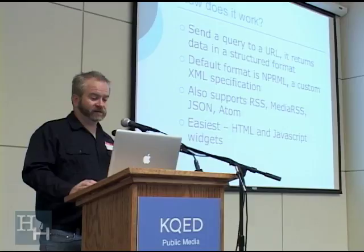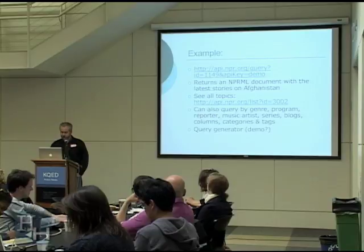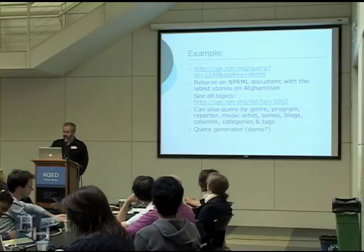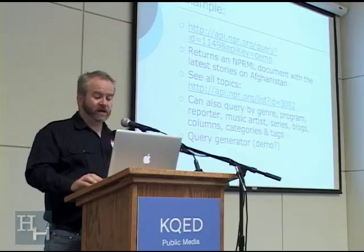Like most APIs, the NPR API works by sending a query to a specific URL and it returns the data in the structured format that you choose. The URL structure includes a query ID and then an API key, which you register for as part of the process at NPR. Anyone can get a key. The URL shown returns stories on Afghanistan — that's the ID — and you can see all the topics at that URL.